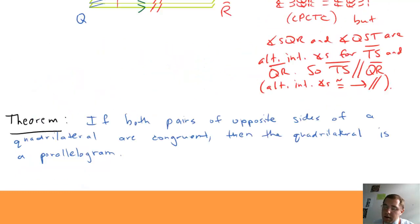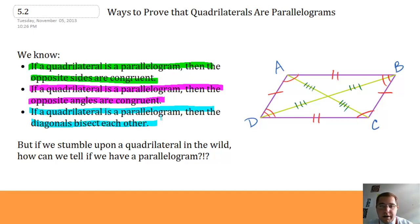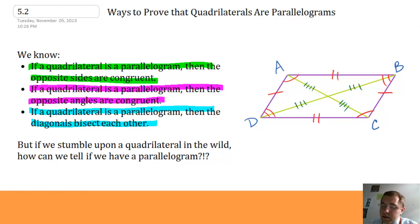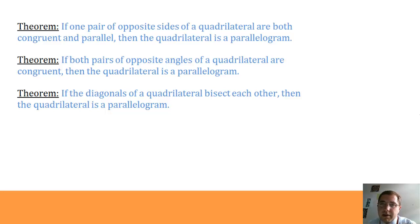But there are other ways. In fact, each of these theorems that we knew were true about parallelograms actually make quadrilaterals parallelograms if we look at their converse. If a quadrilateral has both pairs of opposite angles congruent, then that quadrilateral is a parallelogram. If a quadrilateral is such that the diagonals bisect each other, then that quadrilateral is a parallelogram. And if one pair of opposite sides of a quadrilateral are both congruent and parallel, then the quadrilateral is a parallelogram.